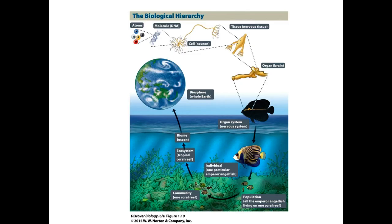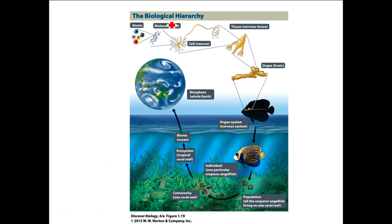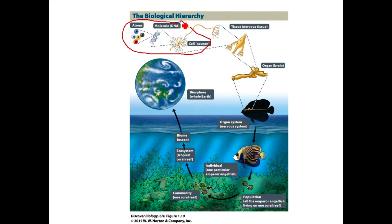Because life is so diverse and so big, it can be helpful to use this biological hierarchy to understand it. This is just trying to break living organisms and their environment into different levels. Starting very small, we can see that all living organisms are made of atoms. Those atoms are combined into molecules, and the molecules are combined into cells. These three things — atoms, molecules, and cells — we call cell and molecular biology, and this is where we'll spend most of our time this quarter.